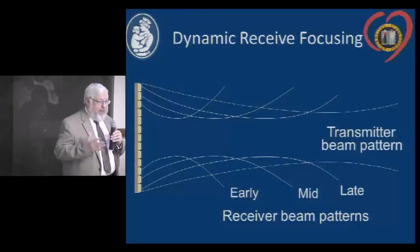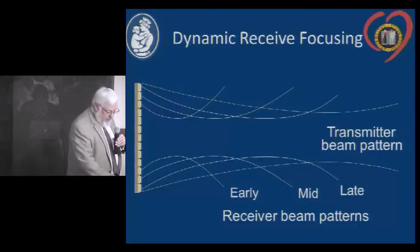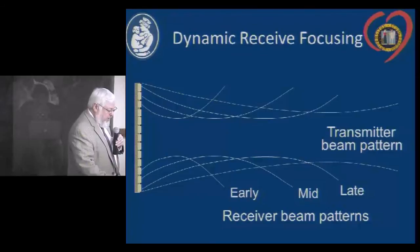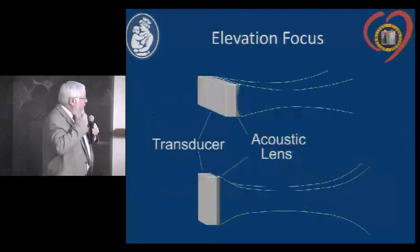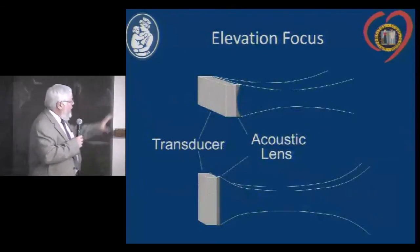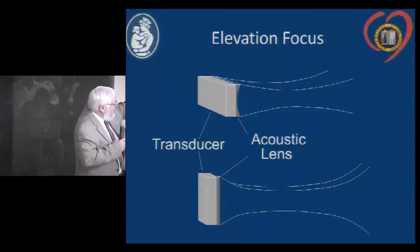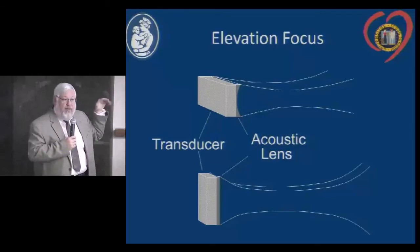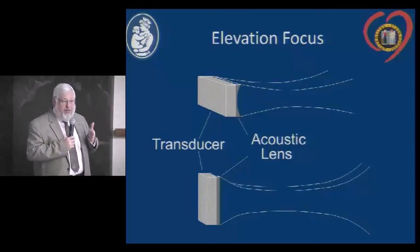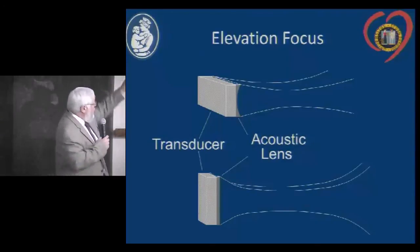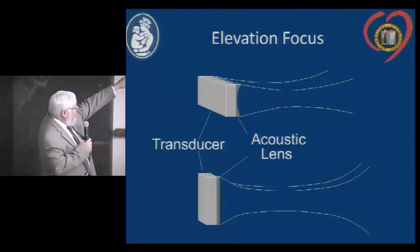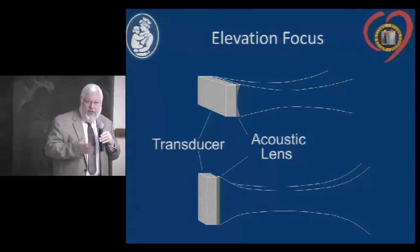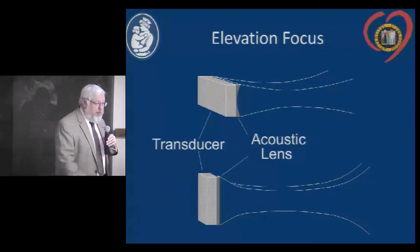Dynamic receive focusing was developed years ago and modifications are still used today for improving ultrasound image quality. This type of focusing occurs within the long axis of the transducer. To focus in the perpendicular dimension — perpendicular to the plane of the image — one must still use an acoustic lens placed on the front of the transducer.